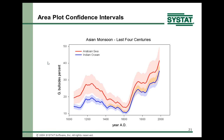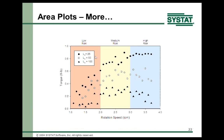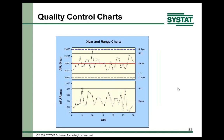Another use of area plots: defining low risk, medium risk, and high risk zones with data plotted on top — that's a scatter plot on top of an area plot. We also have reference lines for creating quality control charts.